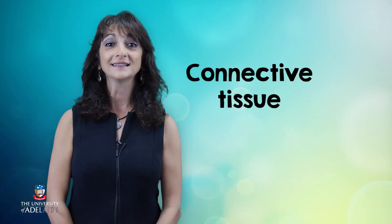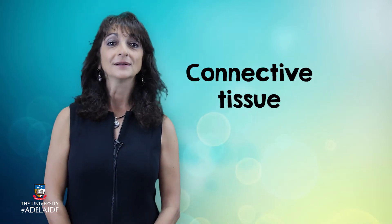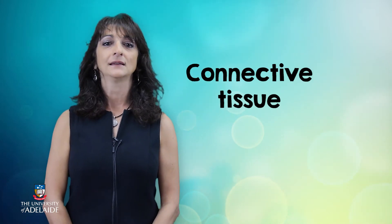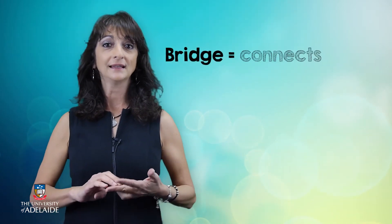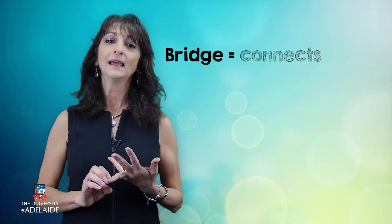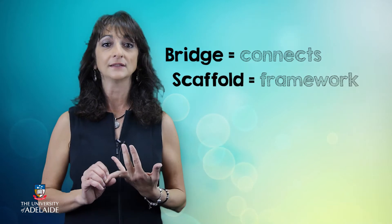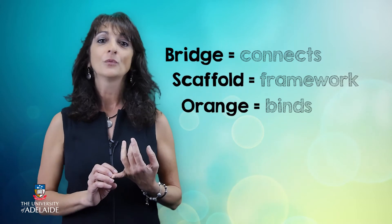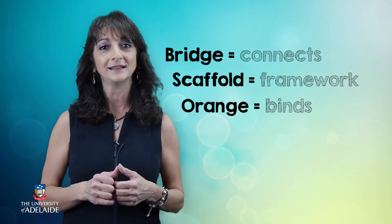Now that you have finished all your lessons in connective tissue for the week, you will remember that we drew on several analogies right at the beginning to give you a conceptual understanding of what connective tissue is actually like. We drew upon the analogy of the bridge that connects one part of the city to the other, then the scaffold of a building to talk about how connective tissue forms a framework, and the orange pill exercise where we looked at the way those juicy pods were kept together by the different layers of connective tissue.